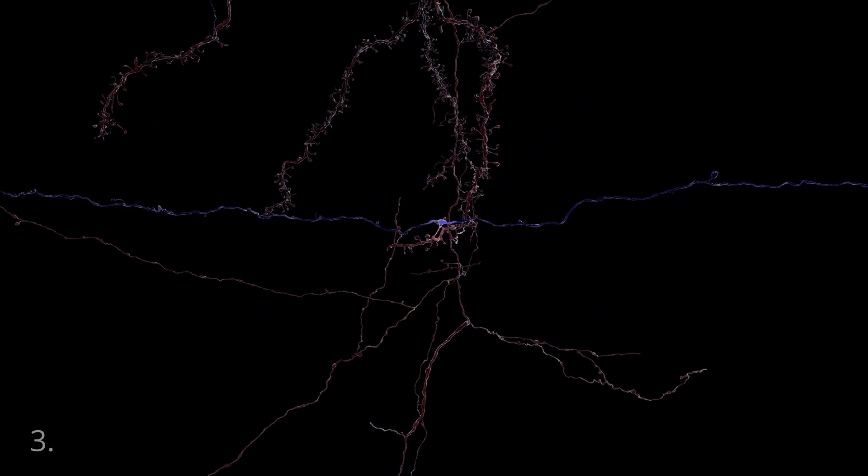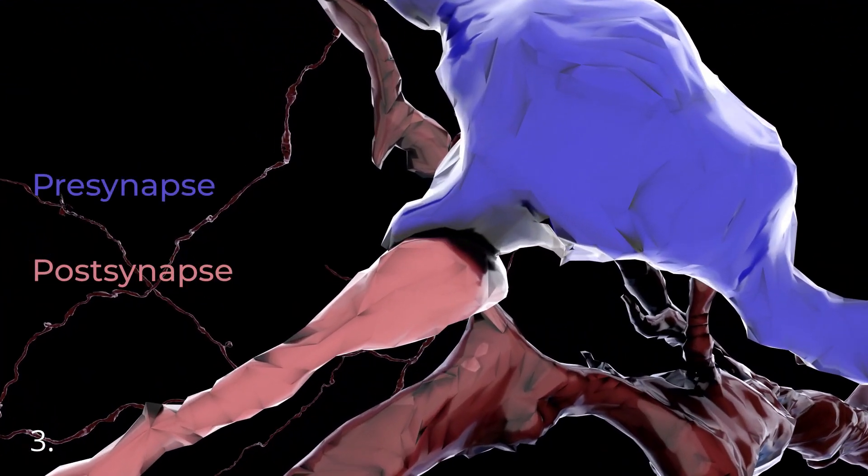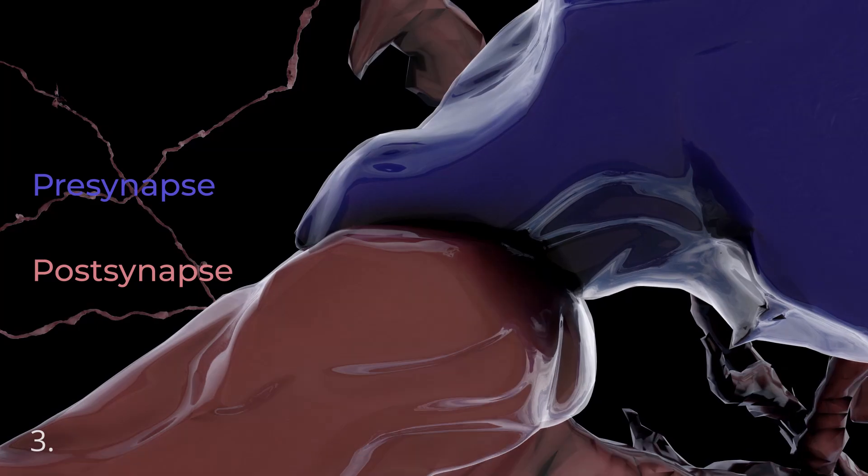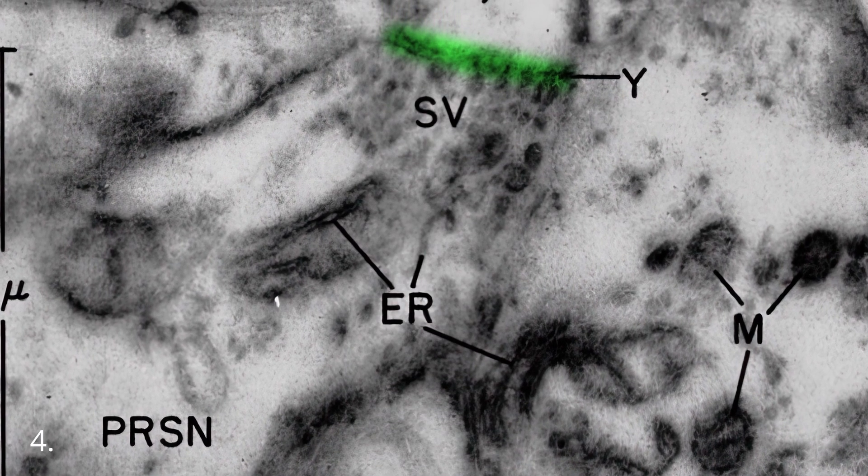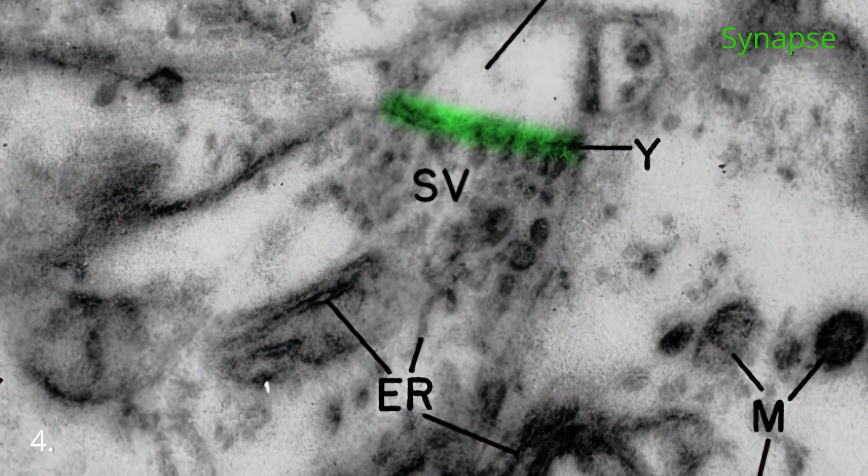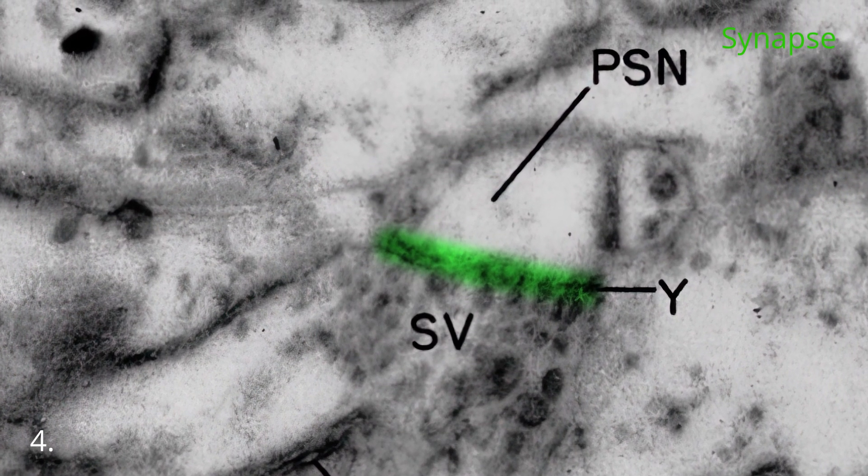While the synapse, the chemical connection between two neurons, was presumed since the late 1800s, the actual existence of the synapse was not formally confirmed until neurons were examined with the high-resolution electron microscope in the 1950s.